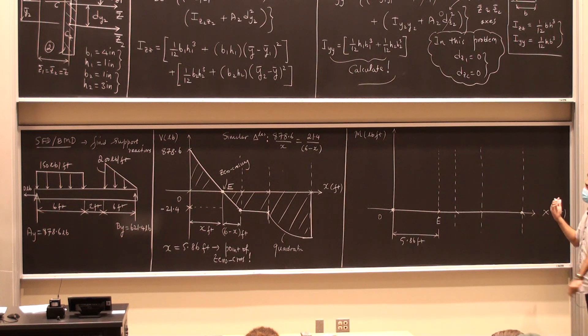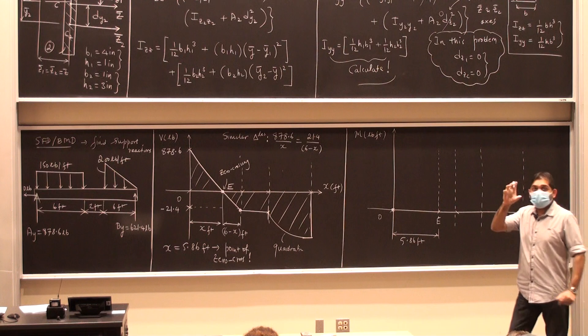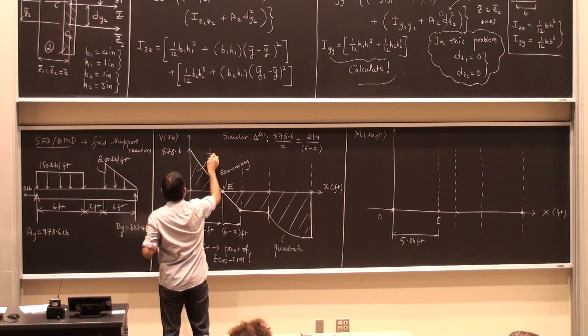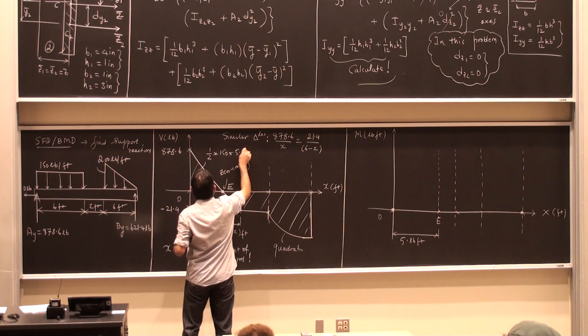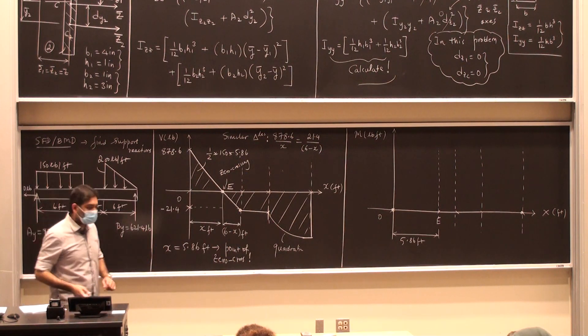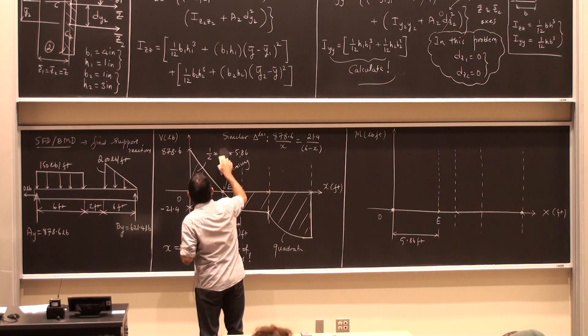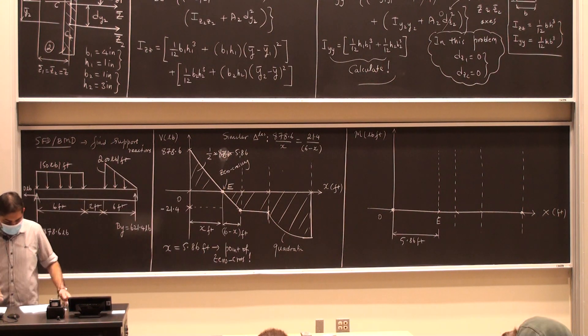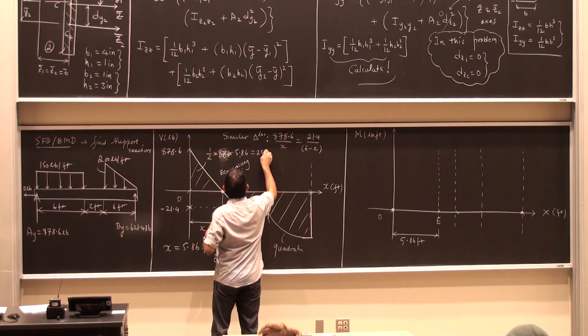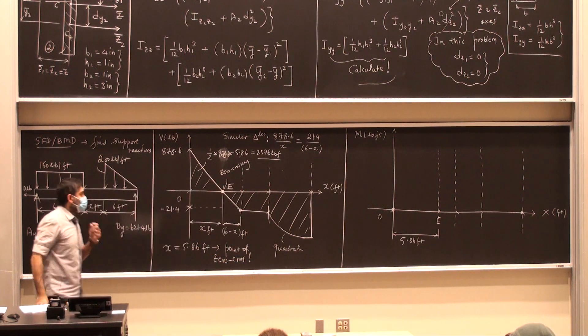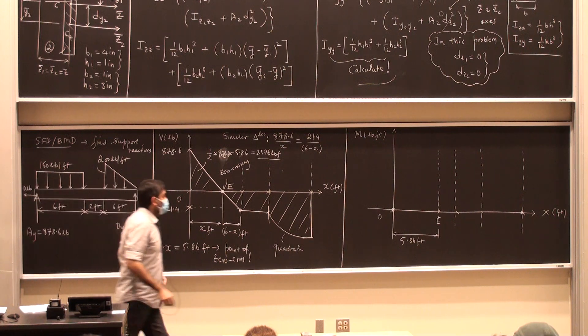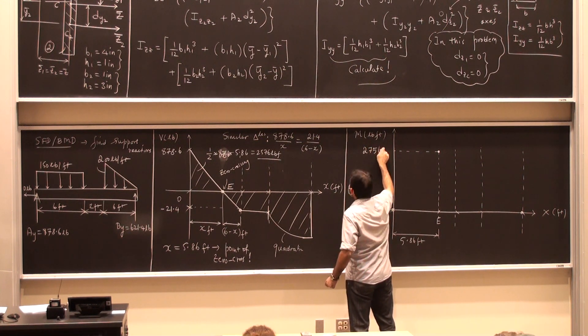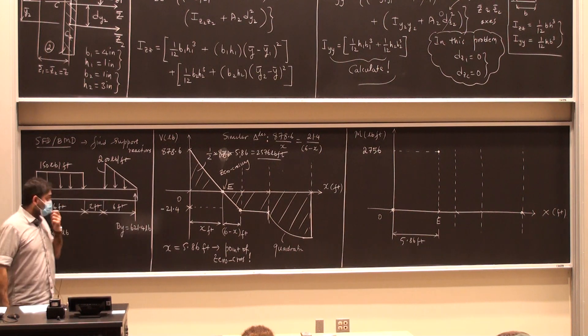From the beginning of the wave all the way to the point E, what's going to be my bending moment value? It's going to be the area under the triangle portion, which is this triangle here. So this area is half 878.6 times 5.86. And this value ends up being 2576 pound feet. So this is going to be the maximum value of the bending moment at the point E. At E, 2756 pound feet, which is nothing but the area under the shear force time.